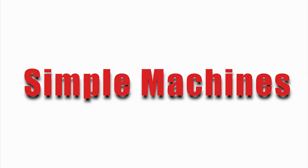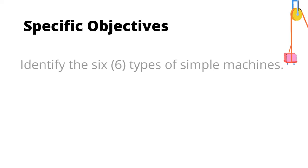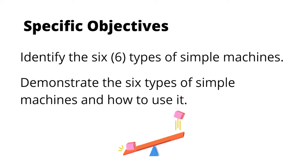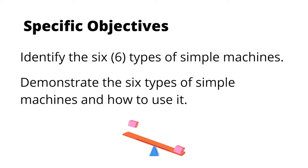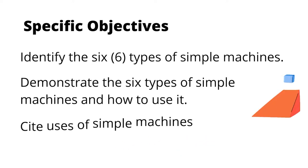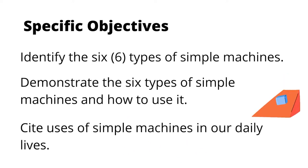For today's lesson, the objectives are as follows. Number one, identify the six types of simple machines. Number two, demonstrate the six types of simple machines and how they are being used. And number three, cite uses of simple machines in our daily lives.